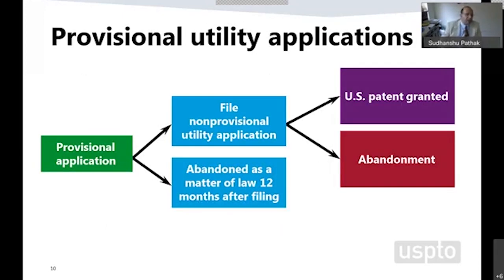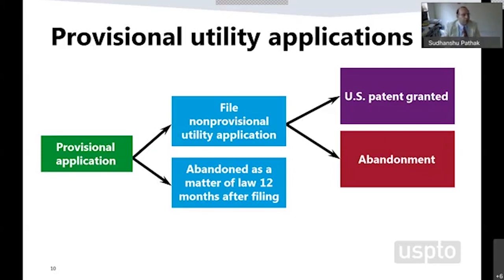Once you file a provisional application, it lasts for 12 months. You then have an option to file a non-provisional application, which goes through the examination process and can result in either an issued patent or abandonment. Regardless of whether you file a non-provisional, the provisional will abandon after 12 months. It is very important to note that this 12-month period is not extendable, not renewable, and is a finite, definite period. If you do file a non-provisional within that 12-month period, that will continue the prosecution.